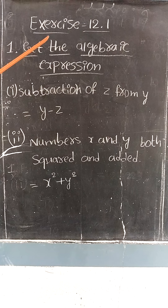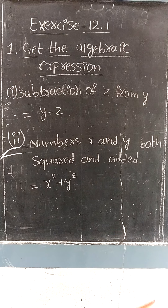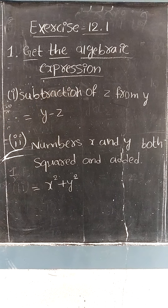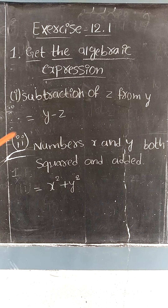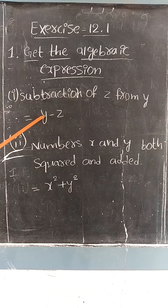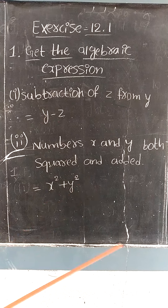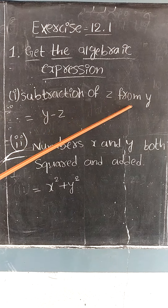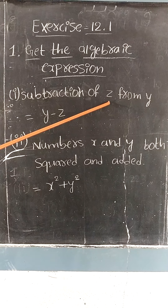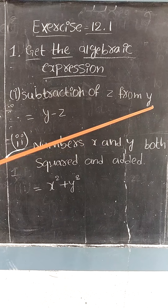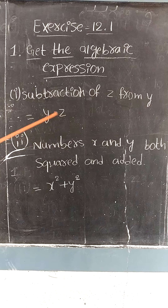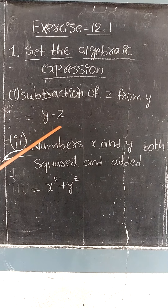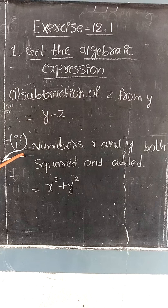Next, exercise 12.1. In the first question we get the algebraic expression — they have given it in a sentence and we have to write it as an algebraic expression. First one: subtraction of z from y. Z should be subtracted from y, therefore we write y first, then minus z. The answer is y minus z.